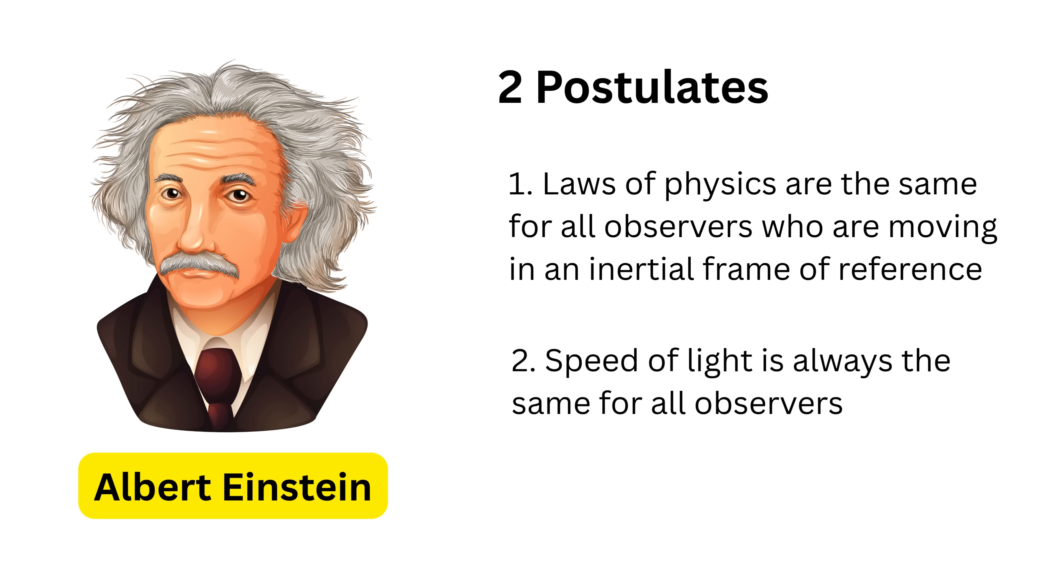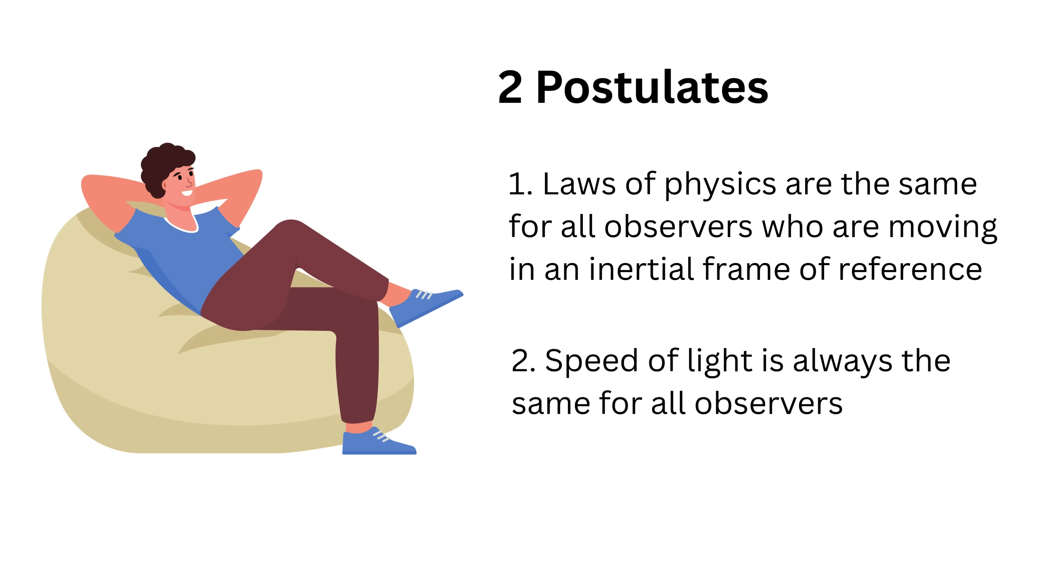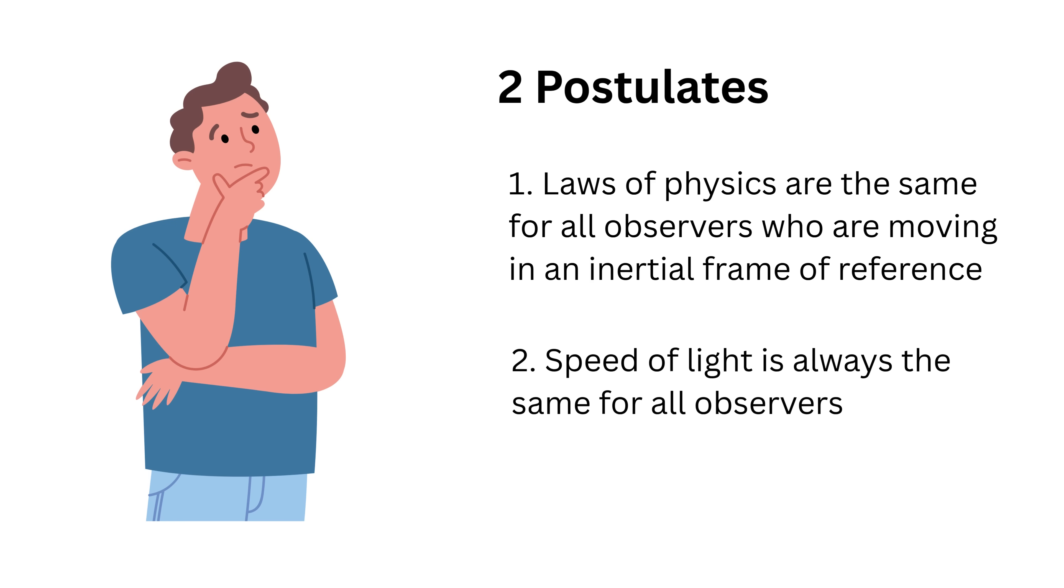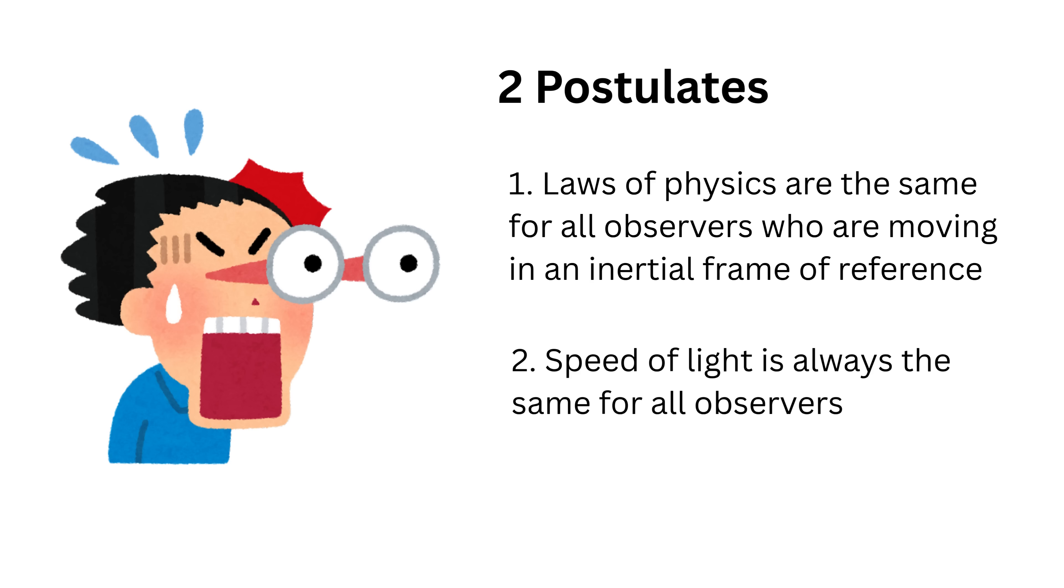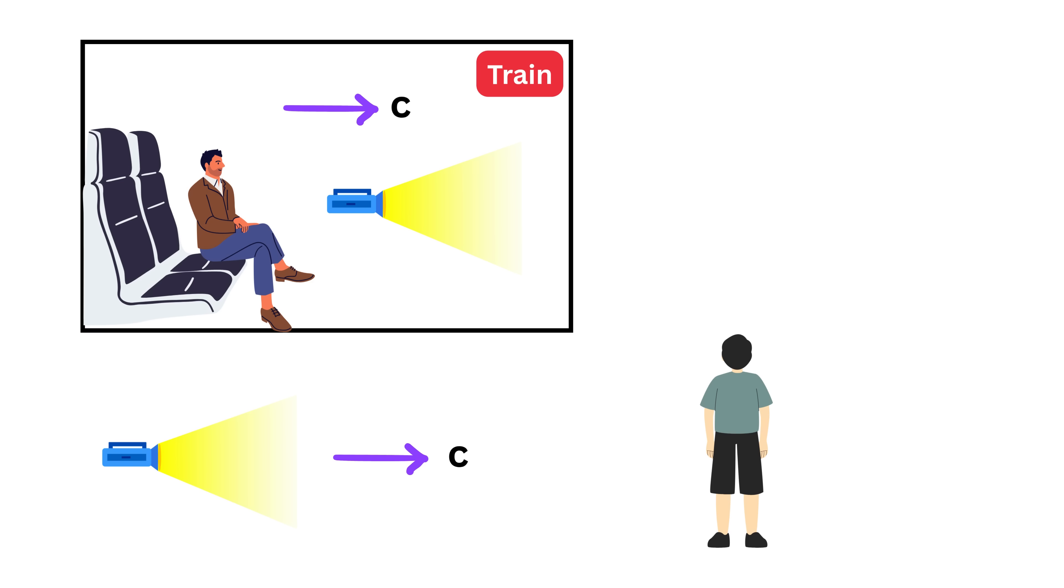At first these postulates sound simple, but when you think carefully about them, they lead to some very strange and surprising results. In our light and train example, in order to make both people agree on the same speed of light, the universe quietly adjusts how time flows and how distances behave for each person.